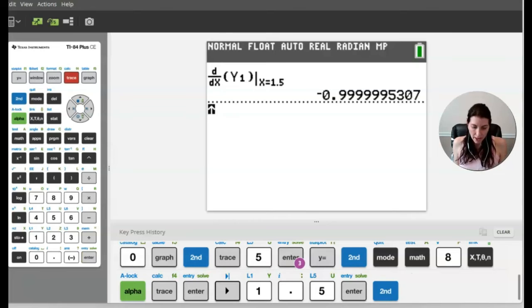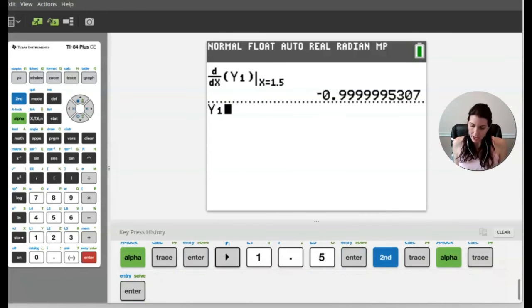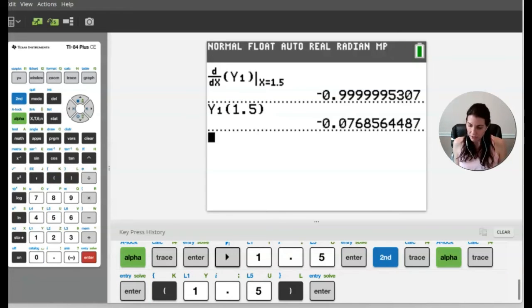So I'm going to go ahead and again use the idea that my function is already typed into Y1, and then let's evaluate that at 1.5 and we see we get a negative value.